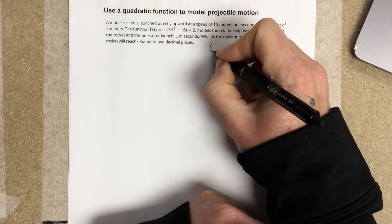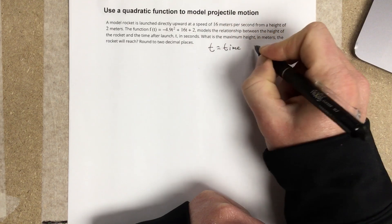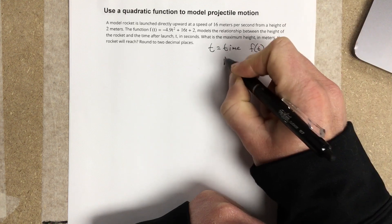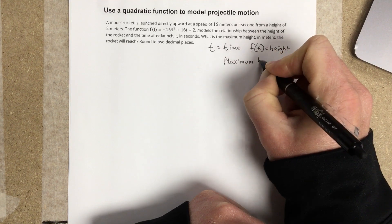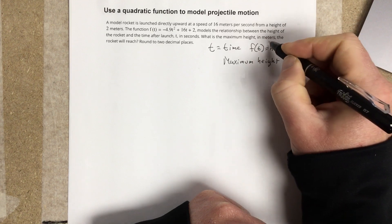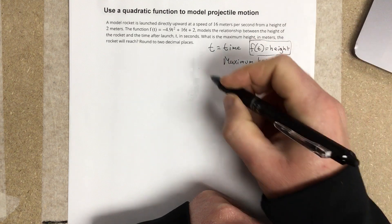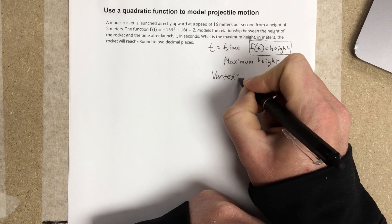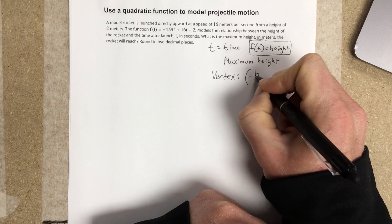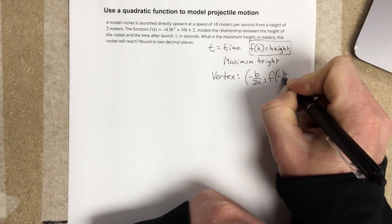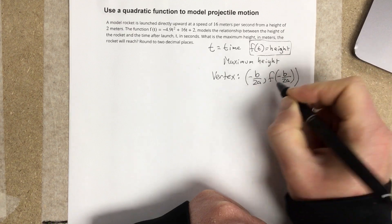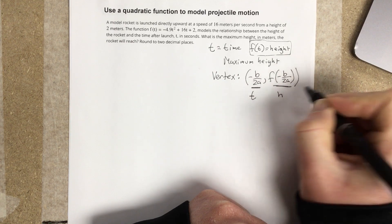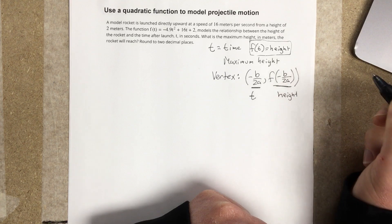In the equation, t is the time and f(t) is the height. They want to know the maximum height, so we're looking for this piece here. To get anything that's a maximum, we have to find the vertex because we're talking about a parabola. The vertex is going to be negative b over 2a, comma f of negative b over 2a. But the thing I need to pay attention to is this is time in my situation because the x values are time and this is height. So I actually need to find the f of negative b over 2a part of this.